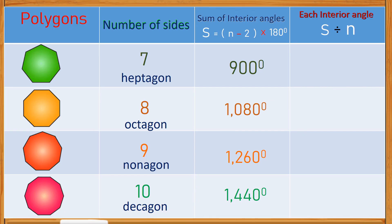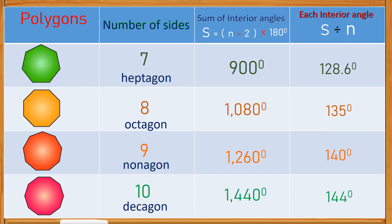Now find the size of each interior angle by dividing the sum by the number of sides. For the heptagon, 900 divided by 7 gives approximately 128.6 degrees. Each interior angle of an octagon is 135 degrees, 140 degrees for the nonagon, and 144 degrees for a decagon.